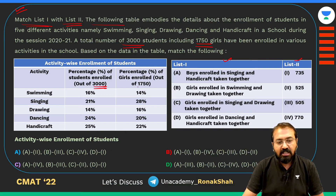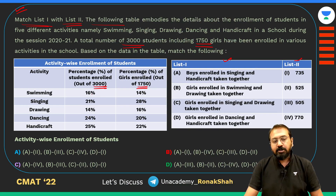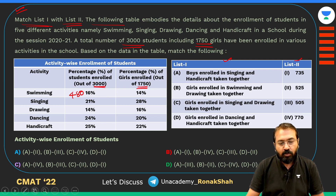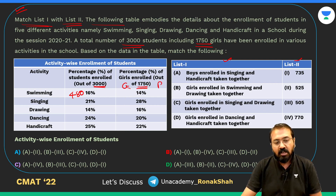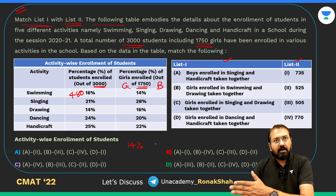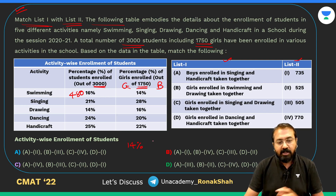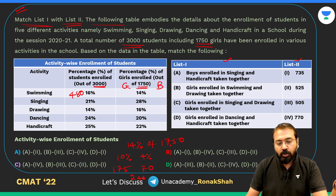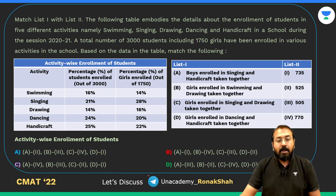We know total 3000 students and 1750 girls. We are given a percentage breakup — in swimming, 16% of 3000 is 480 students. Out of this 480, 14% of 1750 were girls. To calculate 14% of 1750: 10% is 175, and 4% is 4 times 17.5 which is 70, so total is 245.